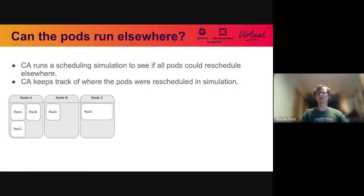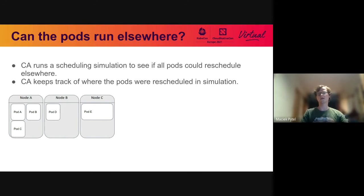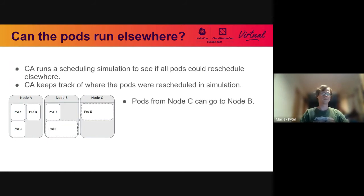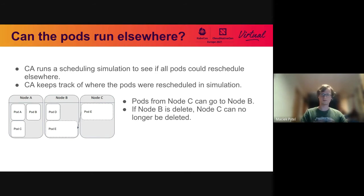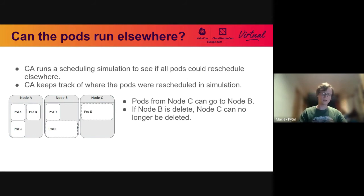The final check is whether all pods running on the node can run elsewhere in the cluster. This is done by pretending to remove the node and asking embedded scheduler code whether it can schedule all those pods on other nodes — exactly as in my earlier example. For instance, if I want to delete node C and it meets all prior criteria, the only pod running there — pod E — could be rescheduled on node B. However, if node B was deleted (by scale-down or manually), node C could no longer be scaled down. Cluster Autoscaler keeps track of this to avoid performing a scale-down that is no longer safe.